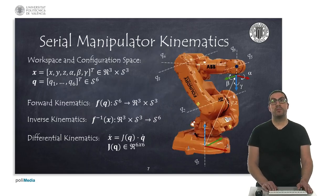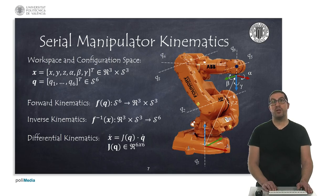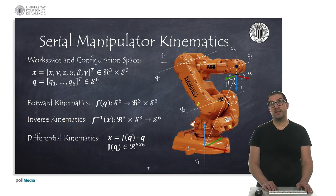The six degrees of freedom serial manipulator robot, that we will usually find in many industrial applications, has a workspace defined in R3 times S3, that allows the positioning of the end effector. The joints of this robot are revolute joints, so its configuration space is defined in S6. Forward kinematics is an analytical function that allows obtaining the position and orientation of the end effector from the six joints. This type of robot has an inline wrist at the point where axes four, five and six intersect, drawn here with a blue dot.